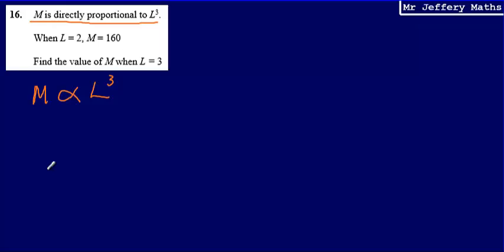Now what that means is that I can multiply a number by L cubed to give me M. And in order to find out what this number is, I'm going to set up an equation. So I'm going to write down that M is equal to K multiplied by L cubed. So I can multiply L cubed by a number and that will give me M. That's essentially what this idea of direct proportion means.